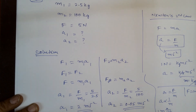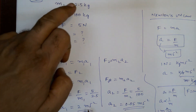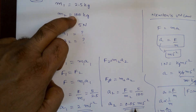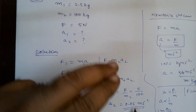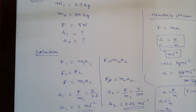So from this, we are able to understand that for the lighter mass of 2.5 kg, the acceleration is 2 m/s². But for the heavier mass of 100 kg, the acceleration is much less — 0.05 m/s². And thereby, the gravitational force is remaining constant here.